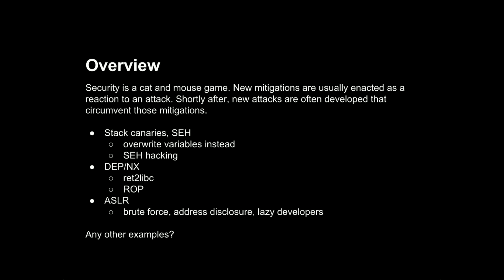Once that defense is in place, people start looking at it and say, 'Well, we can circumvent that so-and-so way.' So that's what we're going to be talking about today — this back and forth of binary execution and binary exploitation. We're going to talk about older exploit mitigations: stack canaries and stack exception handling, and then the ways to get around those. We'll talk about DEP — data execution prevention — which basically just makes it so that you can't run normal shellcode. And then we'll talk about ASLR and the ways to beat ASLR.